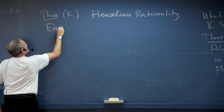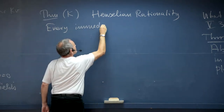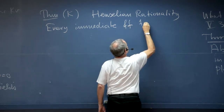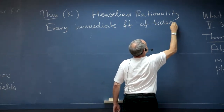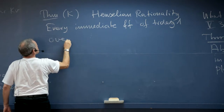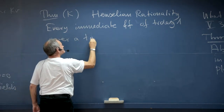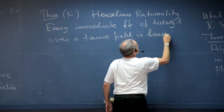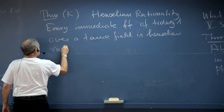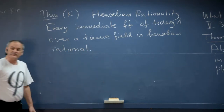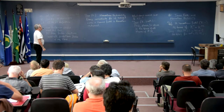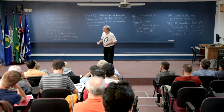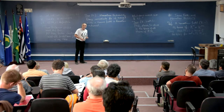The Hanselian rationality theorem states: every immediate function field — where the value group and residue field remain the same — of transcendence degree one over a tame field is Hanselian rational. Remember from case one in chapter five, the problem was to find an X such that F lies in K(X) Henselized. In this case you have to work very hard; the proof is quite involved.